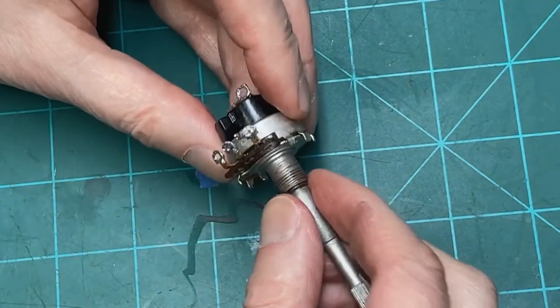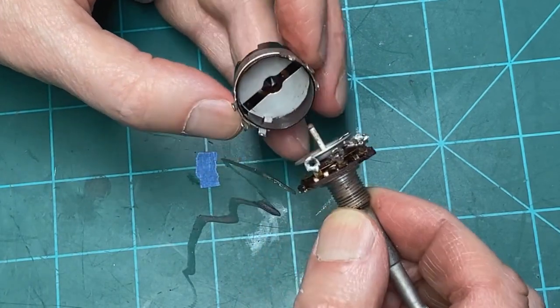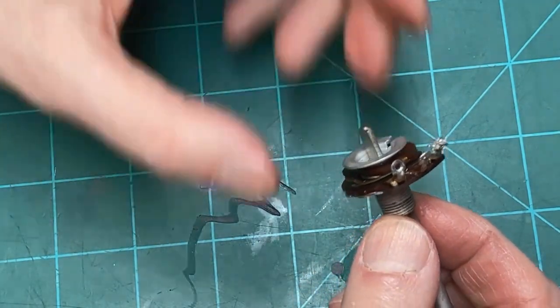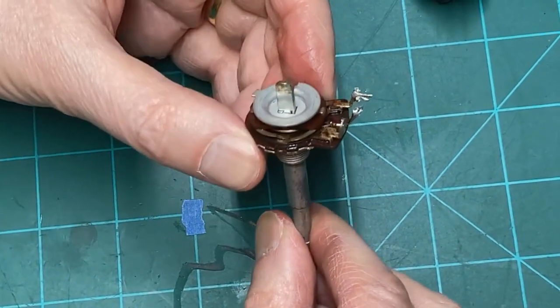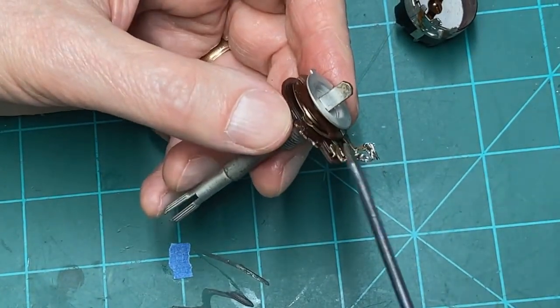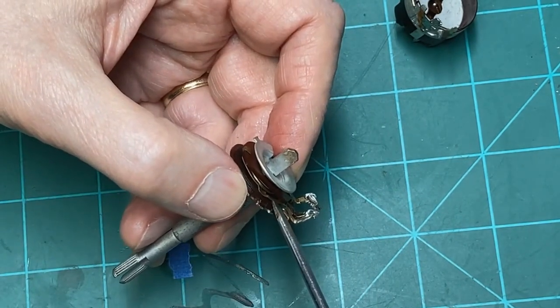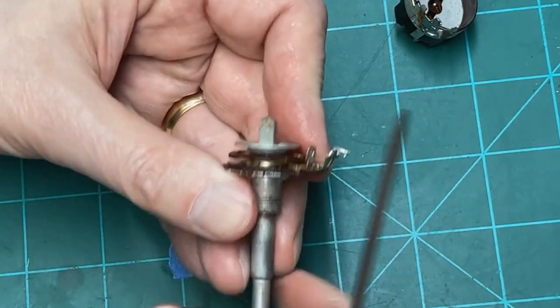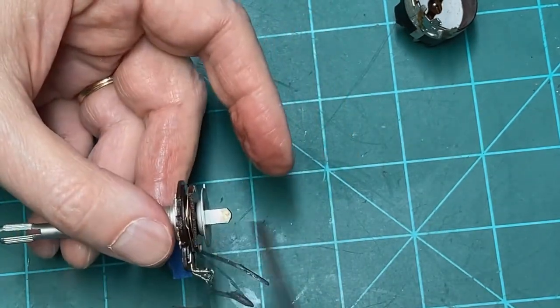Set that aside and we'll see if we can carefully pull this apart. This is the switch, of course. And this is the wiper connection. I'm just going to see what the tension was on this. It's pretty loose.